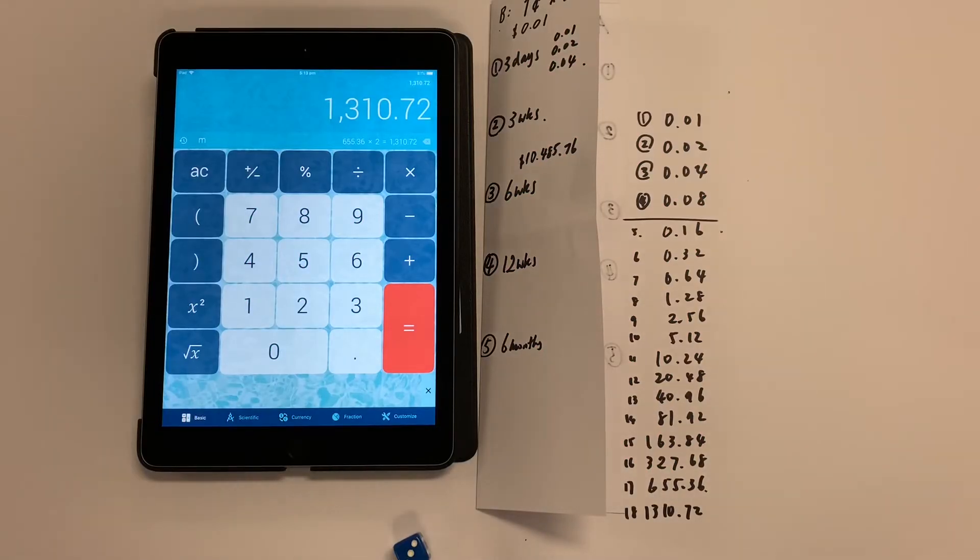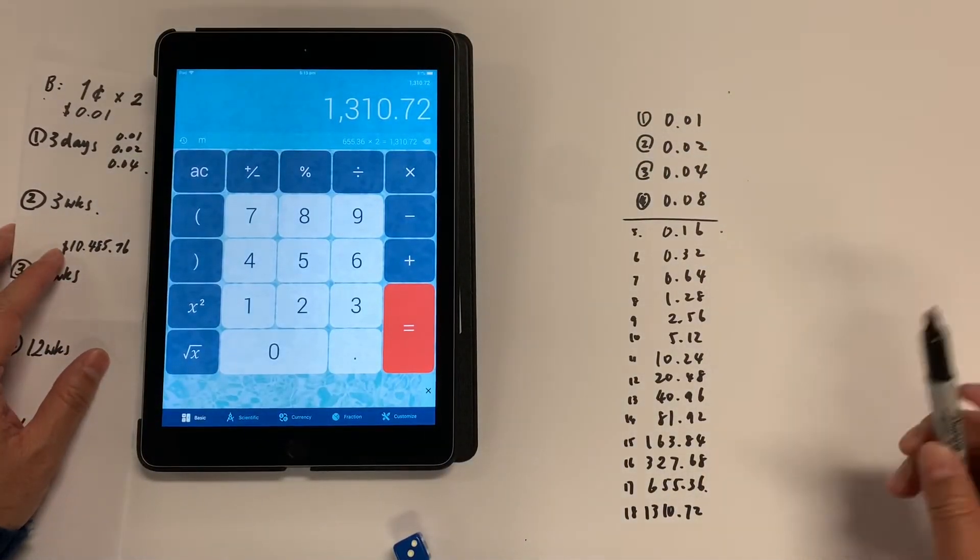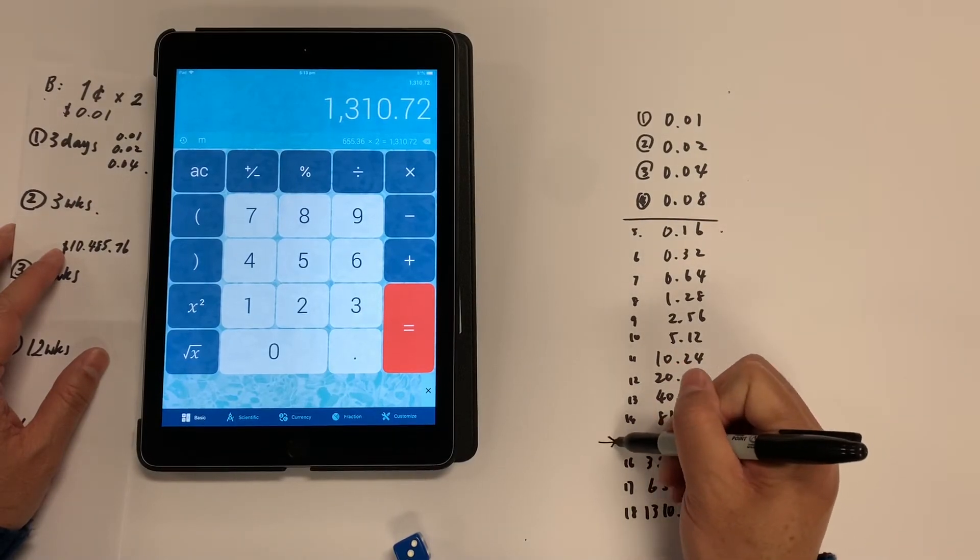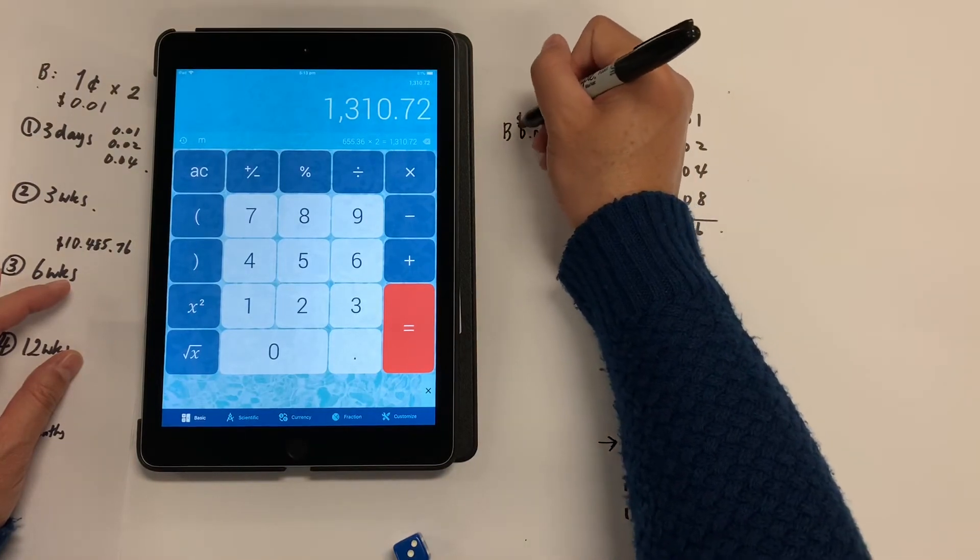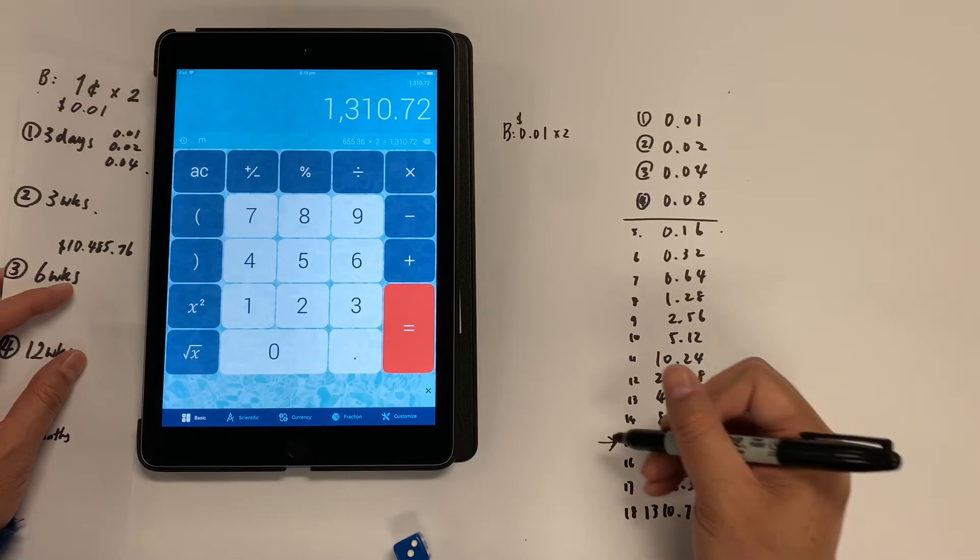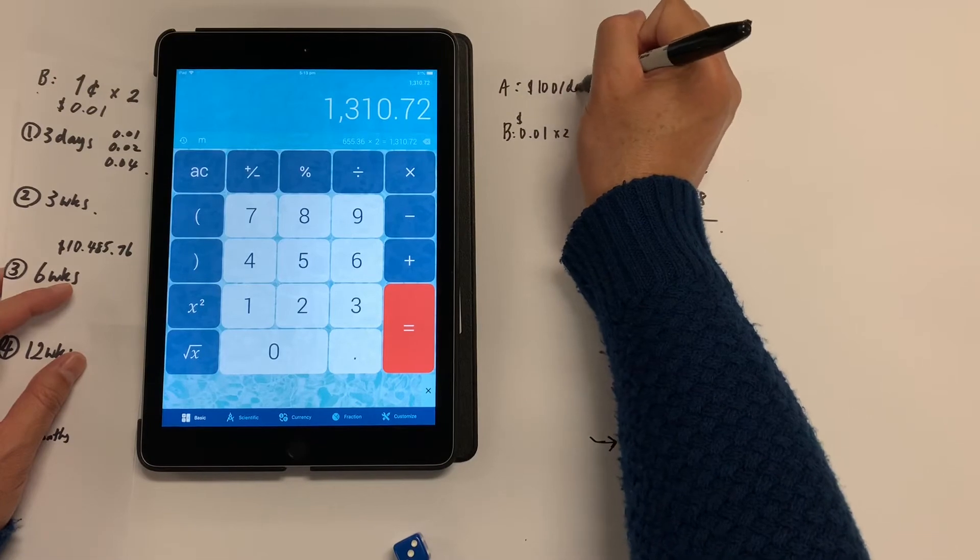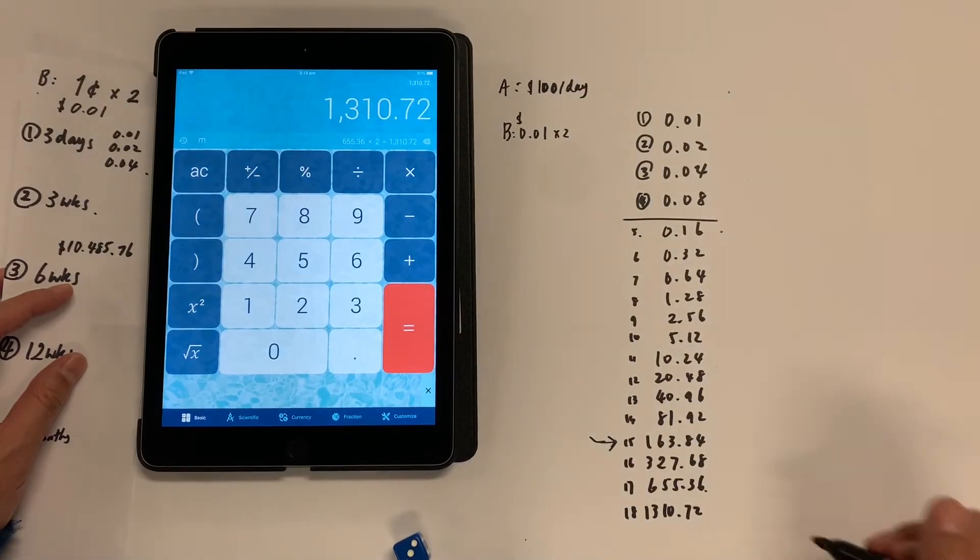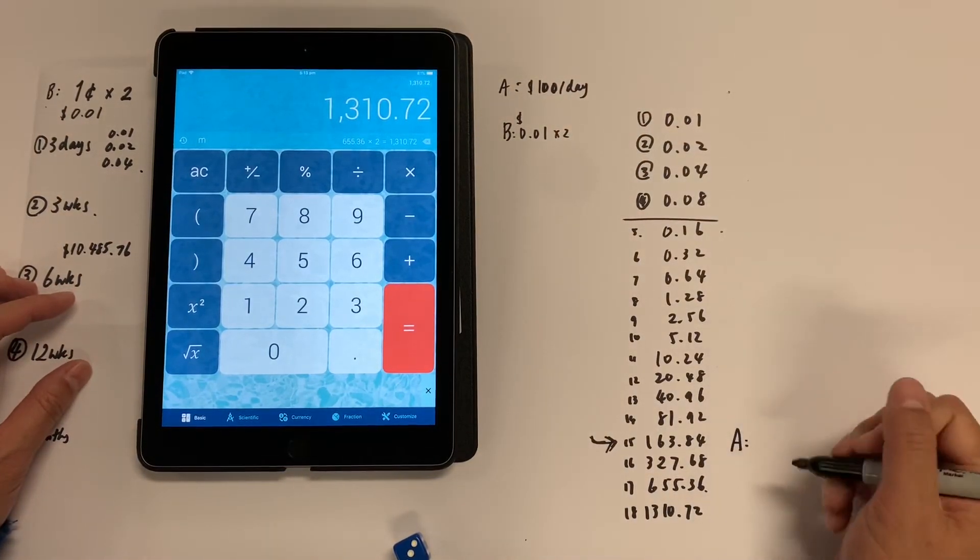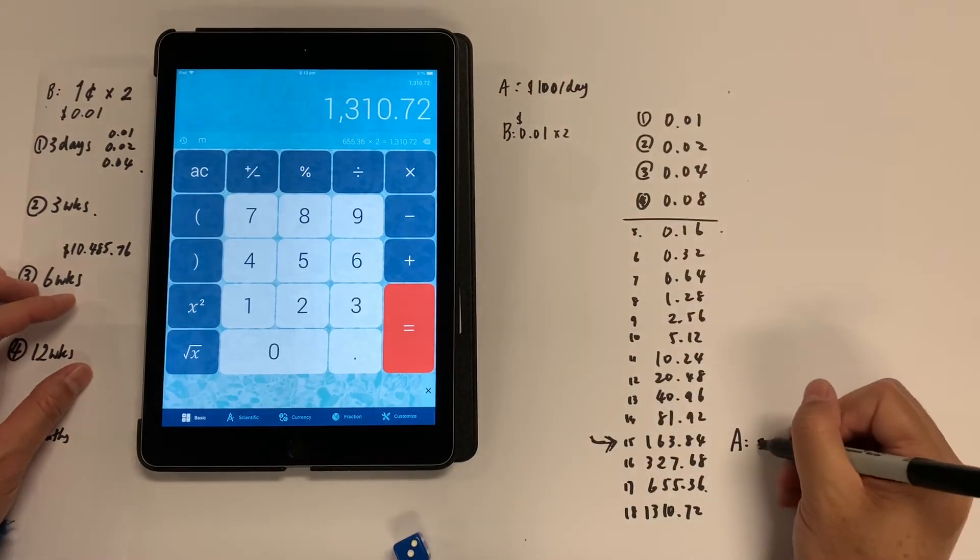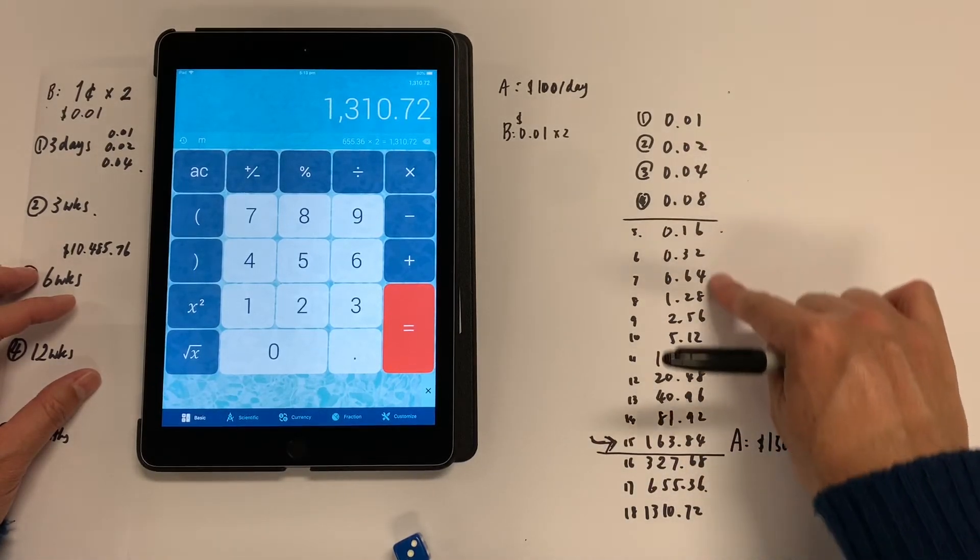So quickly, I calculated all the doubles. So 15th day, my employee B's wage goes over the other person, right? A person gets $100 a day. So 15th day, person A must have received 15 times 100. So $1,500 altogether. This doesn't look that good.